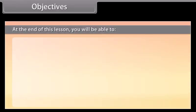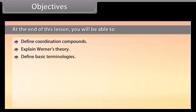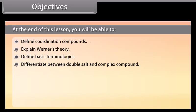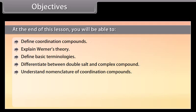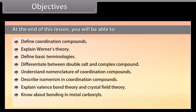Objectives. At the end of this lesson, you will be able to: define coordination compounds, explain Werner's theory, define basic terminologies, differentiate between double salt and complex compound, understand nomenclature of coordination compounds, describe isomerism in coordination compounds, explain valence bond theory and crystal field theory, know about bonding in metal carbonyls, and analyze stability of coordination compounds.